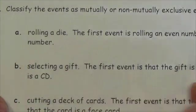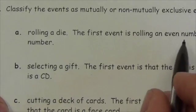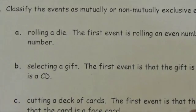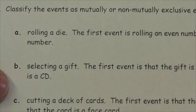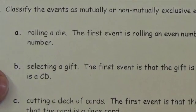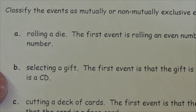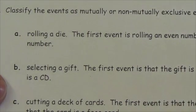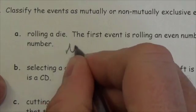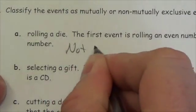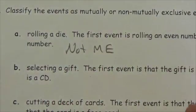We're going to roll a die. The first event is rolling an even number, and the second event is rolling a prime number. Is it possible for a prime number to be even? The answer is yes — the example is two. Can you roll a two on a die? Yes. So these are not mutually exclusive; there is an outcome that they share.